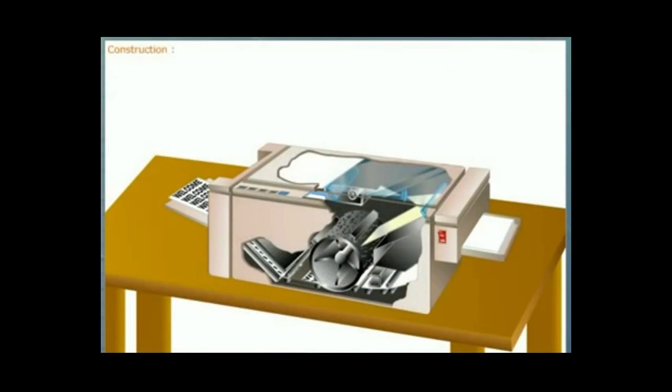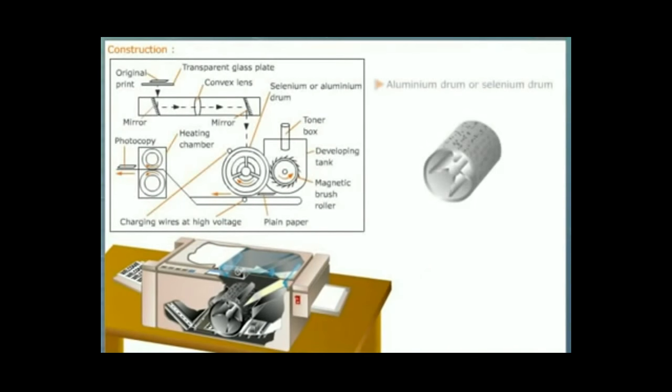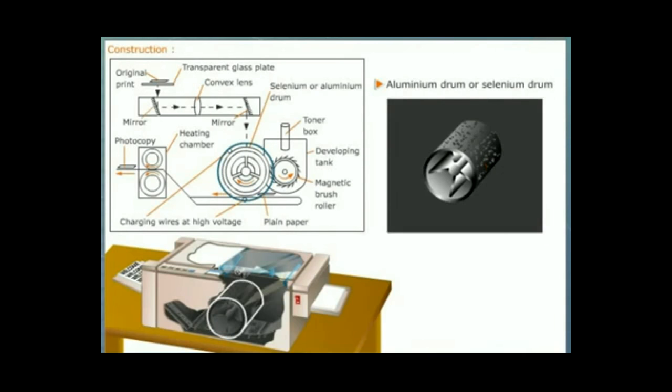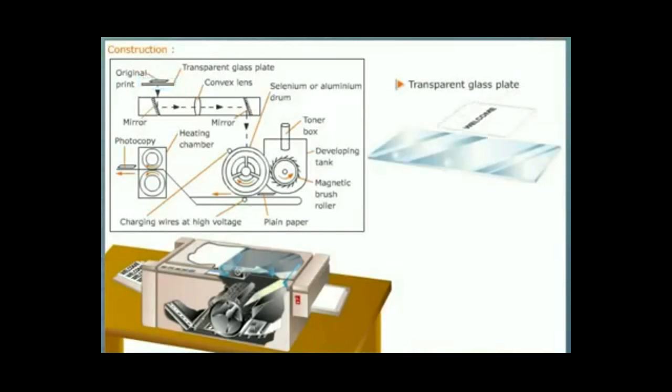Construction: A photocopier consists of an aluminum drum whose surface is slightly oxidized. Over the oxidized surface, there is a thin layer of selenium which is a photosensitive material. This drum is housed in an absolutely dark compartment. There is a fine slit for the entry of light. There is a transparent glass plate on which the original print document is placed. The original document is placed in such a way that the printed portion is in contact with the glass plate.